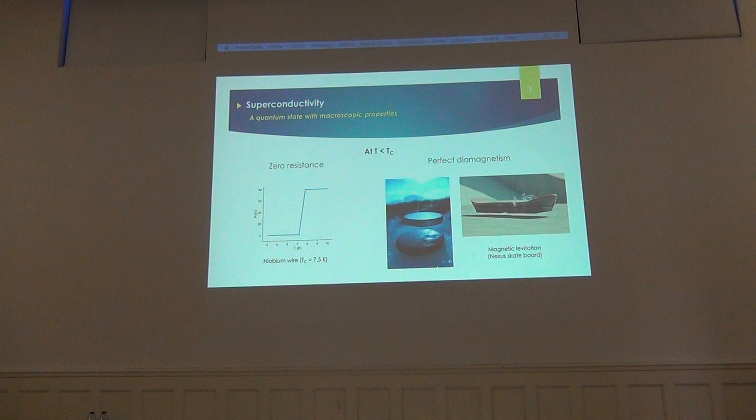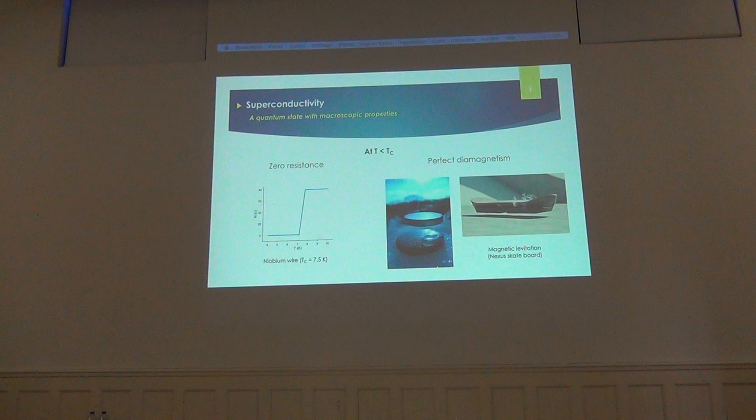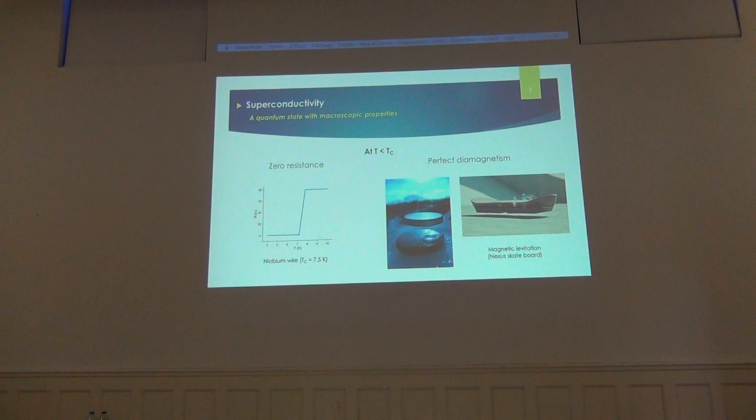So first, quickly — superconductivity. Two microscopic properties: the zero resistance. Here you can see the curve of the resistance depending on the temperature of one of our samples — a niobium wire with a critical temperature around 7.5 kelvins. And the second property is perfect diamagnetism — you can see here the nexus skateboard levitating because of the magnetic levitation.